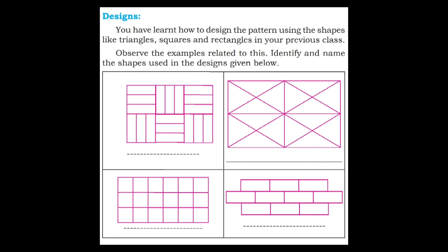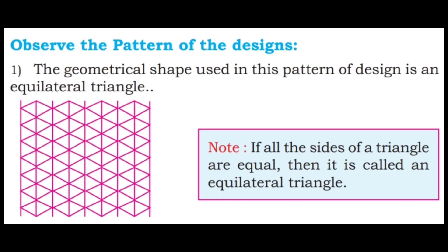The third shape is a square. The fourth shape is a rectangle. This is a rectangle. The third shape is a rectangle.